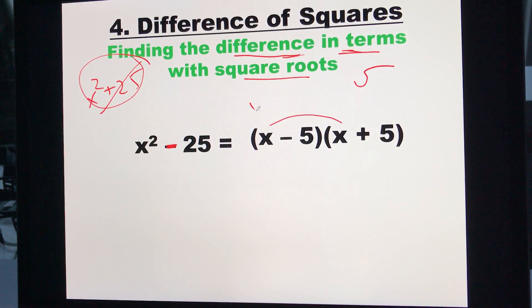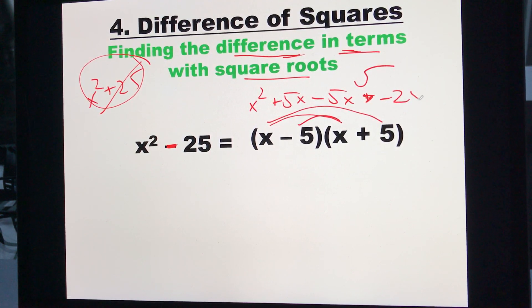I can go x times x is x squared. x times 5 is plus 5x. Negative 5 times x is negative 5x. And then negative 5 times positive 5 is negative 25. We see the positive 5x and the negative 5x go to 0. And I'm left with x squared minus 25. Here I am, x squared minus 25.